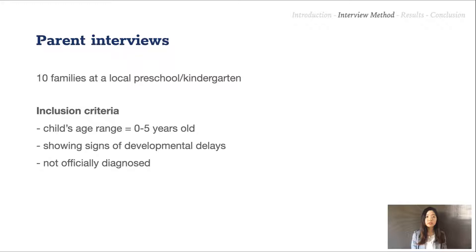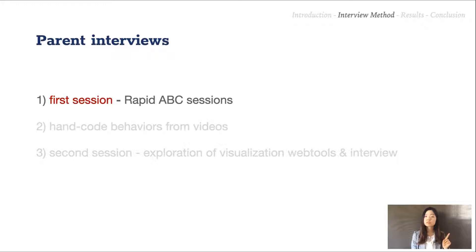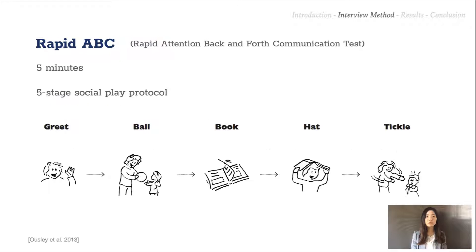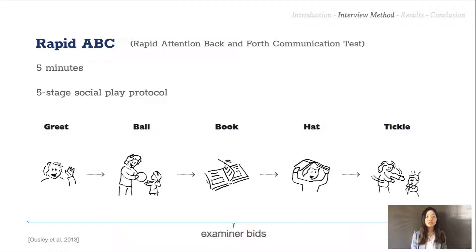The parents attended two sessions. The first session was conducted at the school where the parent and child participated in a Rapid ABC session, which stands for the Rapid Attention Back and Forth Communication Test. This five-minute pre-screening test was developed to identify infants and toddlers at risk for autism. A Rapid ABC session consists of five stages of play: greeting, rolling a ball, reading a book, wearing the book as a hat, and tickling. Each stage contains one or more examiner bits used to prompt for certain behaviors such as eye contact and other simple communication skills.